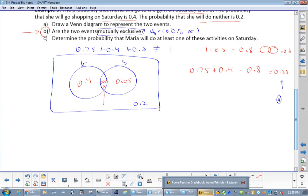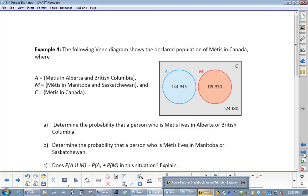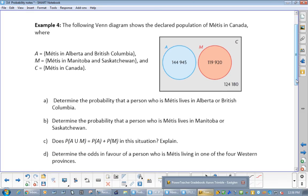This question, it's like too easy really, but we'll go through it fast. So A stands for Métis in Alberta and BC, M stands for Métis in Manitoba and Saskatchewan, and C stands for Métis in Canada, but that's not right. That should be in the rest of Canada, right? This number out here is people that are not in A and M. Universal is not 124,180. So that's one typo. When I was looking through it I was like, what's going on there?